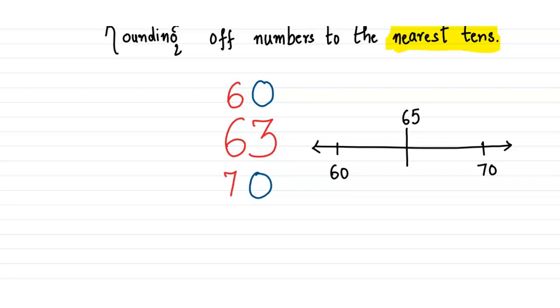Now let's make the markings: 61, 62, 63, 64, 65, 66, 67, 68, 69. The number 63 lies over here. This is number 63.